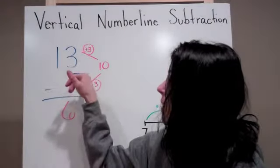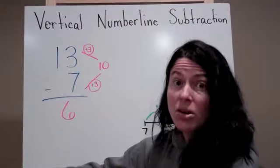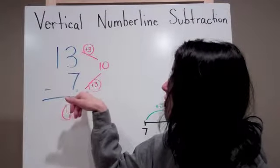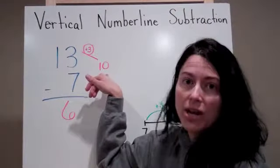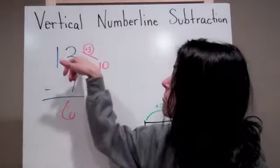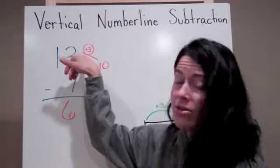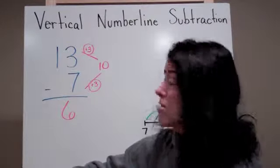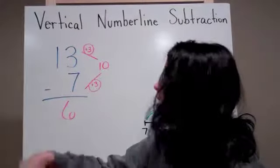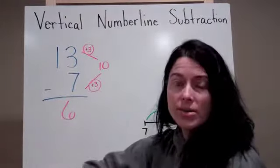So my friendly number, my landmark number, is 10. So I am going to jump plus 3 up to 10 from 7, and I am going to jump from 10 to 13, which is also a 3. So if I add those two jumps, I would come up with 6.